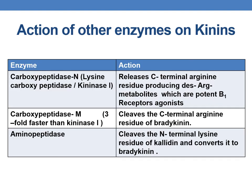Coming to the action of other enzymes on kinins: apart from kininase 2 or ACE, some other enzymes also act on kinins. The first is carboxypeptidase N, also called lysine carboxypeptidase, which is kininase 1. Its action is to release the C-terminal arginine residue, producing desarginine metabolites which are potent B1 receptor agonists. The next enzyme is carboxypeptidase M, which is usually 3-fold faster than kininase 1 and cleaves the C-terminal arginine residue of bradykinin. Aminopeptidase cleaves the N-terminal lysine residue of calidin and converts it to bradykinin.